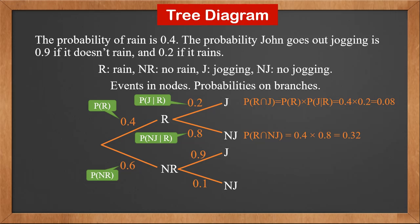Similarly, probability of rain and no jogging is 0.4 times 0.8, which is 0.32. Probability of no rain and jogging is 0.6 times 0.9, which is 0.54. Probability of no rain and no jogging is 0.6 times 0.1, which is 0.06.